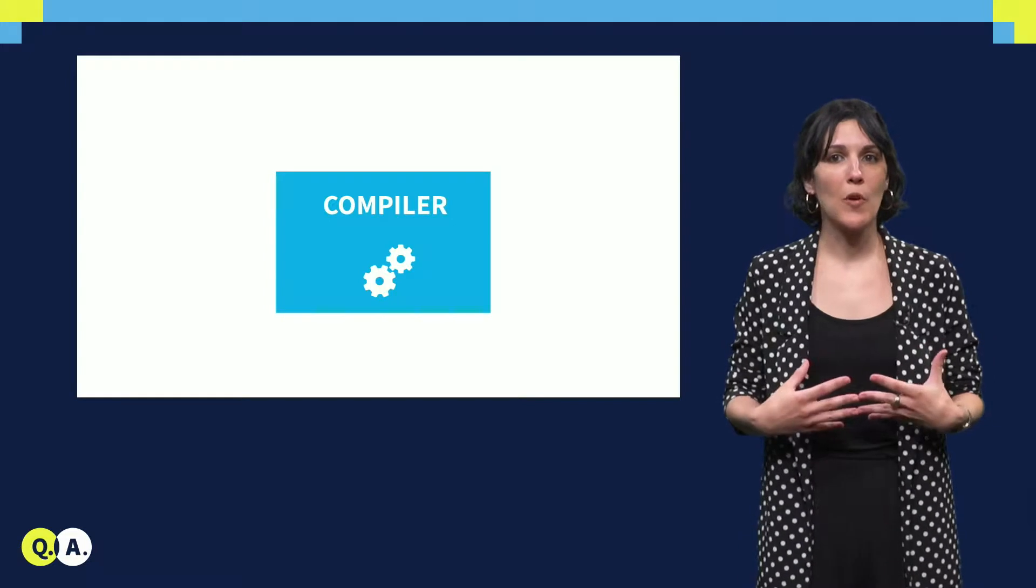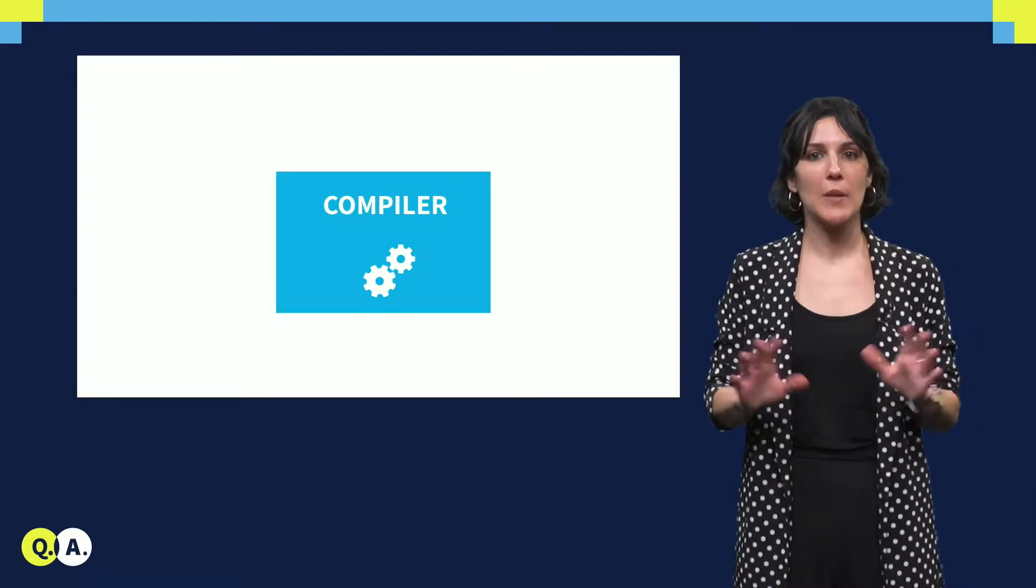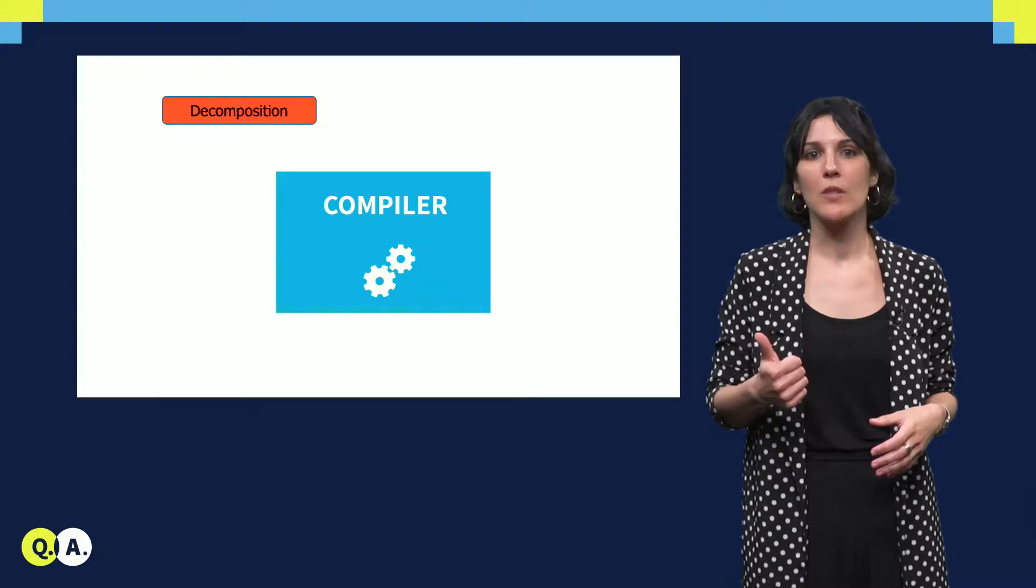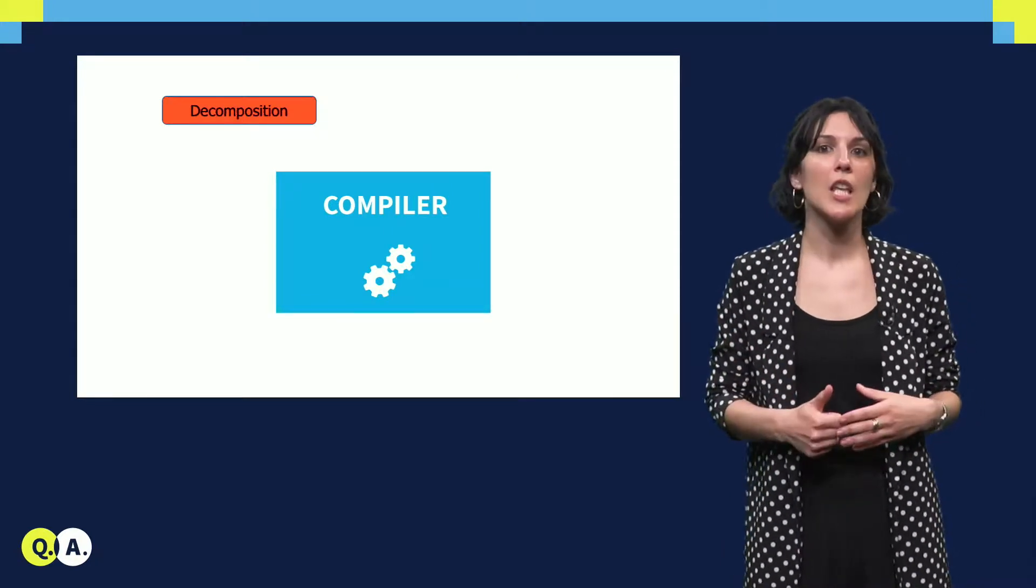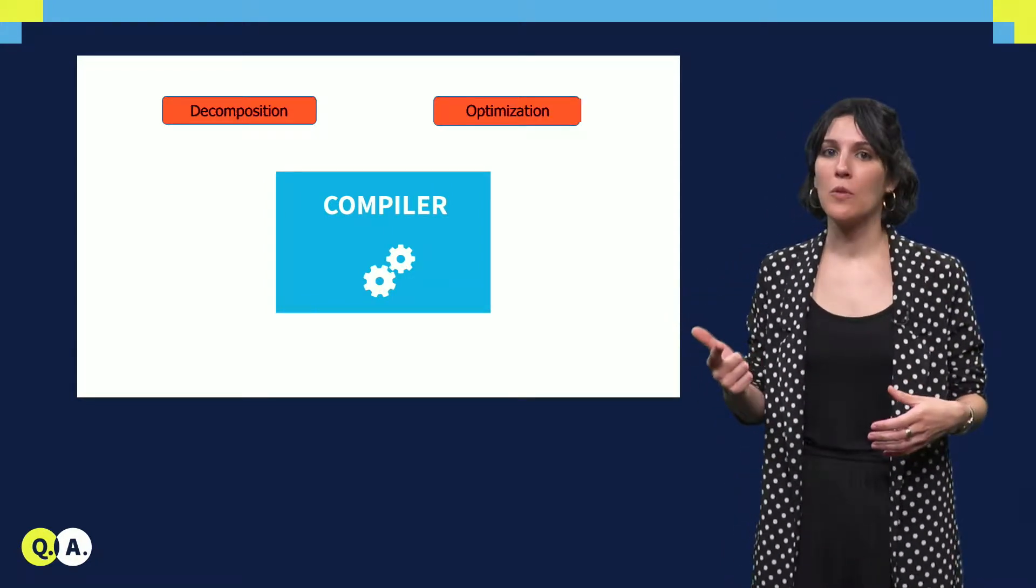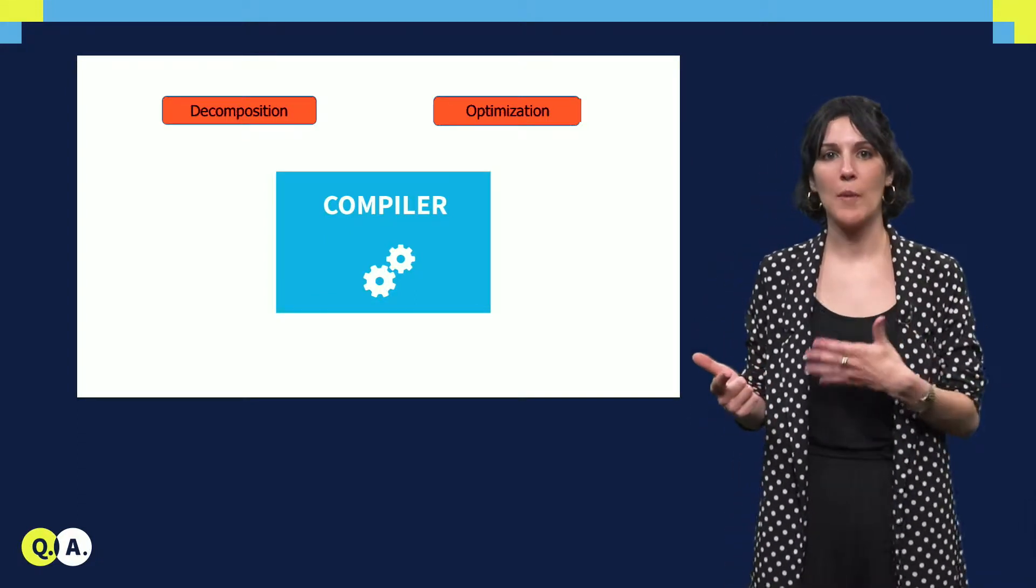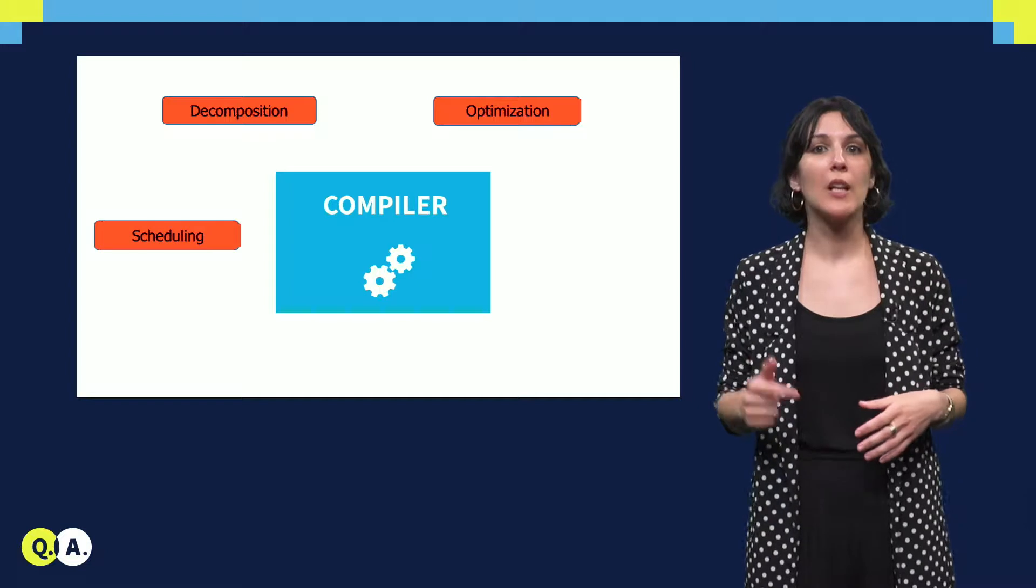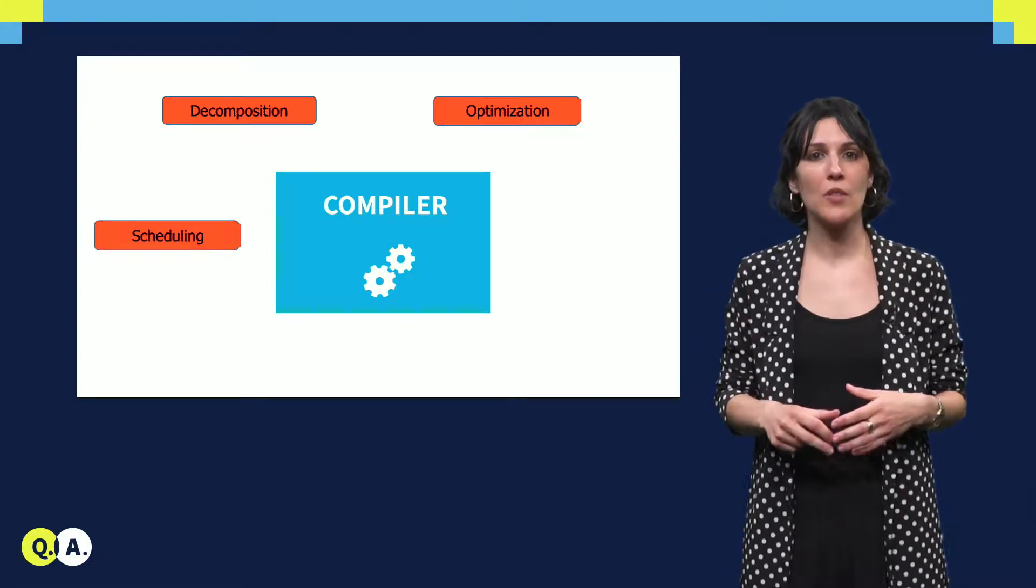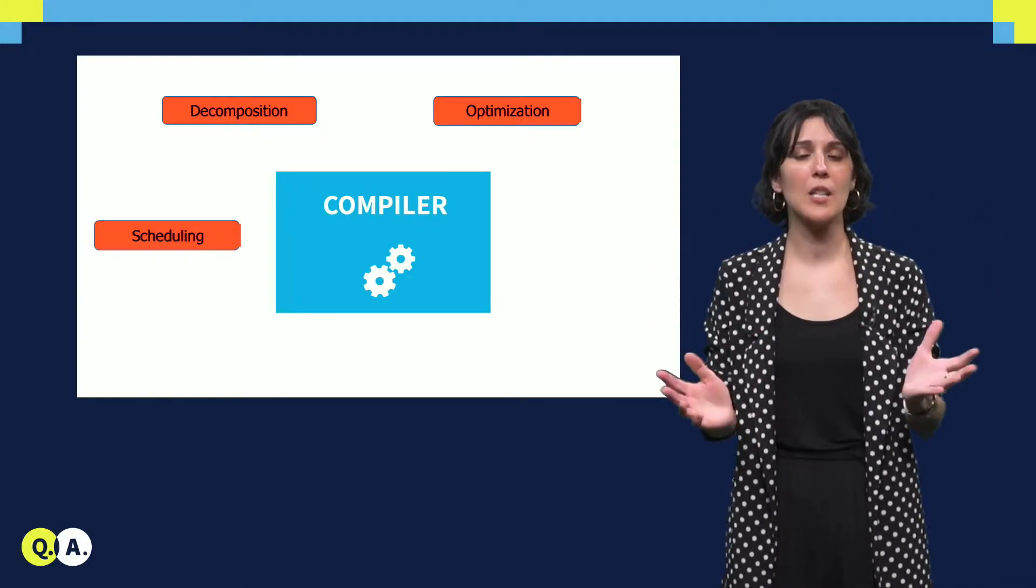To this purpose, the compiler will perform several tasks. It will decompose the quantum gates. It will optimize the quantum circuit in order to reduce, for instance, the number of qubits or the number of operations. It will schedule the operations to maximize the parallelism of the algorithm.